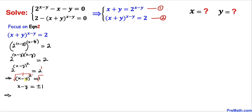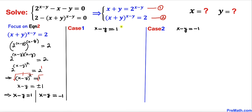So this gives us two cases: case one, where x − y = +1, and case two, where x − y = −1. We are going to investigate both of these cases. Let's focus on case one first.